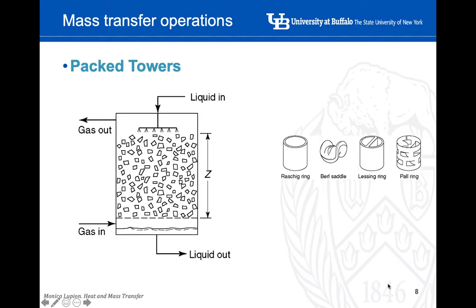Packed tower — another example with a similar concept. We put different phases in contact and try to optimize the surface area and make contact better between the phases. What we additionally do here is incorporate elements inside the tower to force the gas or liquid to follow a longer pathway and increase the turbulence inside the column. The reason is to improve intimate contact between the different phases: increased turbulence leads to better contact and therefore a more efficient mass transfer operation.